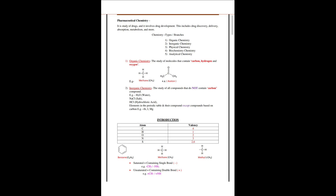Now we look at atoms and their valencies. Carbon has a valency of four. Hydrogen has a valency of one. Oxygen has a valency of two. Nitrogen has a valency of three. Sulfur has a valency of two and six. According to their valency, they form bonds.